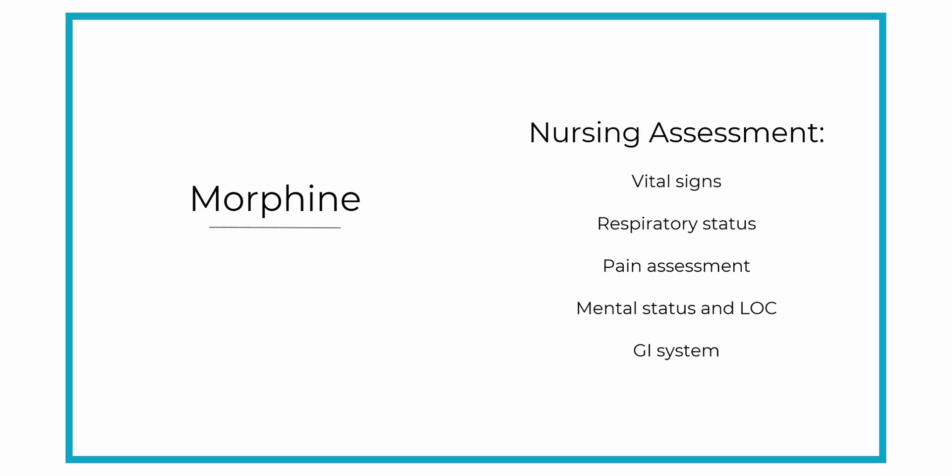Before you give morphine, you also want to know the patient's pain level at baseline. You wouldn't give morphine if the patient's pain level is only a two out of ten, so it's important to assess their pain level first so you have a baseline and know you're appropriately treating their pain.